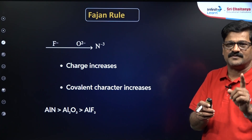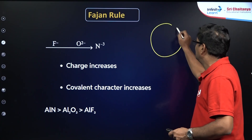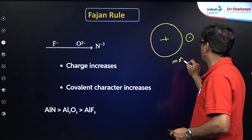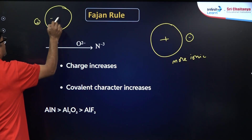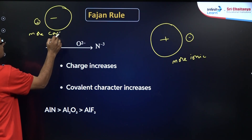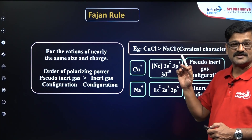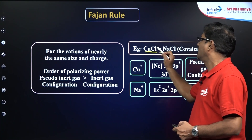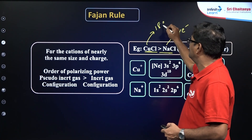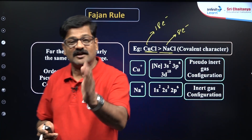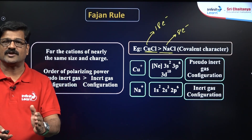Simple method: first check the charge, then check the size of the cation relative to the size of the anion. Big cation with small anion is more ionic. Small cation with big anion is more covalent, if the charge is the same. When comparing sodium chloride and copper chloride — sodium plus has 8 electrons in its outermost shell, while Cu²⁺ has 18 electrons in its outermost shell. 18 electrons means pseudo inert gas configuration, so it has more polarization power and more covalent nature.